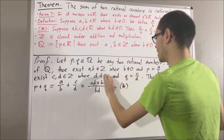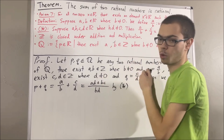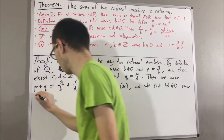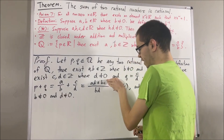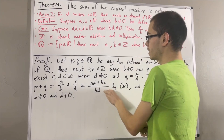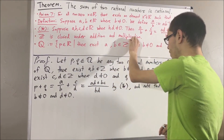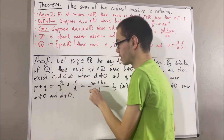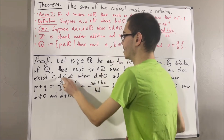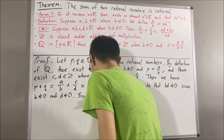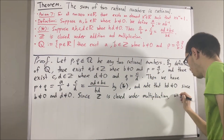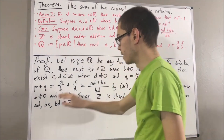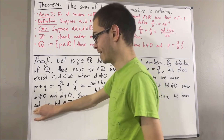Since b and d are non-zero, we know that the product of two non-zero real numbers is a non-zero real number, so bd is non-zero. Since the set of integers is closed under multiplication: since a and d are integers, ad is an integer; since b and c are integers, bc is an integer; since b and d are integers, bd is an integer. Then, using the fact that the set of integers is closed under addition, since ad and bc are integers, ad plus bc is an integer.